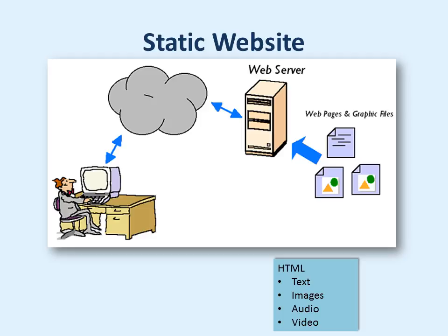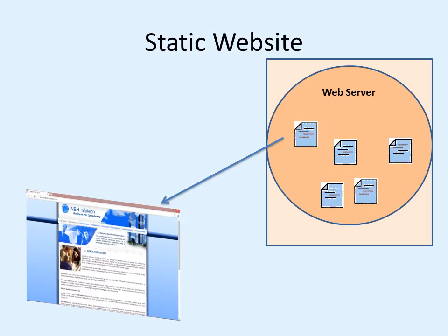How do static web pages work on websites? Here is a web server, and it has a collection of pages along with other media contents like images, audio, videos, etc. When the user enters a domain name of this website via the internet, they access these pages. The pages get loaded directly into their machine and rendered inside the browser. These pages are readily available on the web server — they are ready-made pages. When you click on any hyperlink, the next page will be loaded and so on.